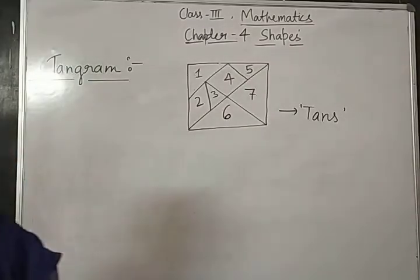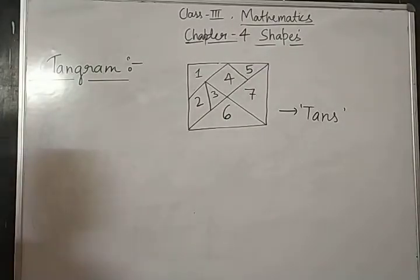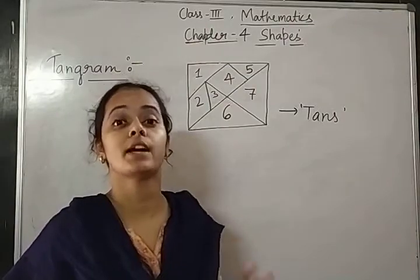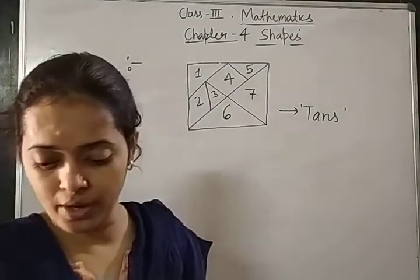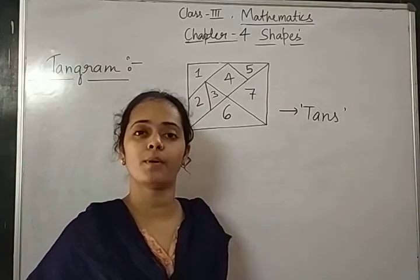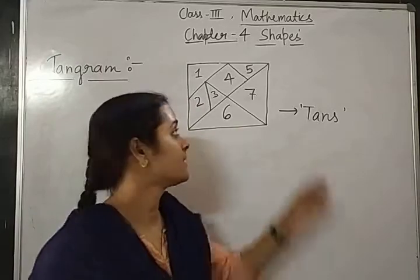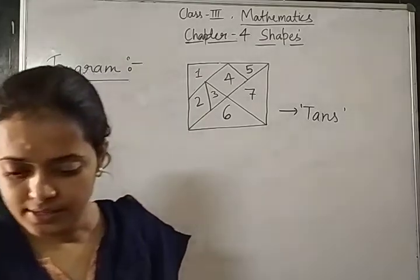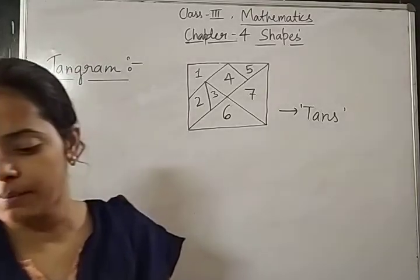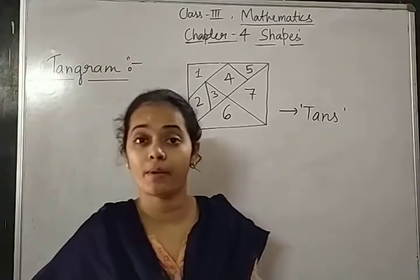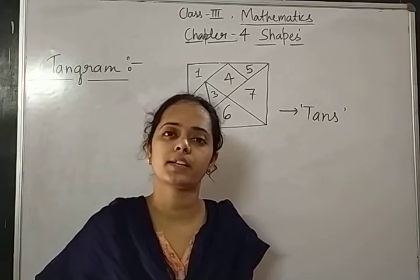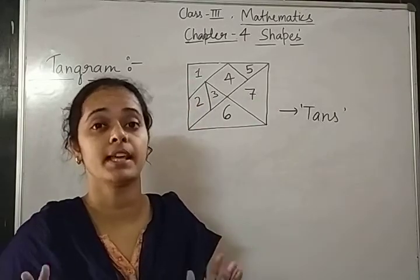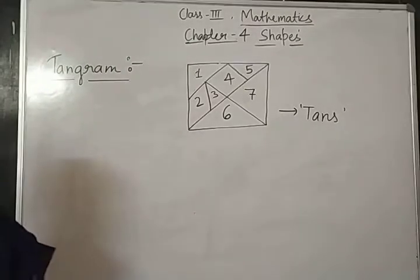Now, these 7 pieces are known as tangs. And tangrams use these shapes like a jointed shape. Now, look at the book. Question number 1 A. What is a bird form? Bird is how formed? By using the tangs, these pieces are separate.